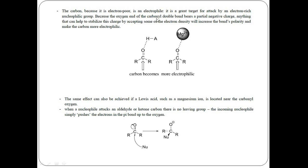The oxygen end of the carbonyl double bond bears a partial negative charge, as oxygen attracts all the electrons towards itself. Anything that disturbs the electron cloud towards this oxygen atom will help to stabilize the charge on the oxygen atom. This is the representation of the carbonyl functional group in which all electrons are attracted towards the oxygen atom.